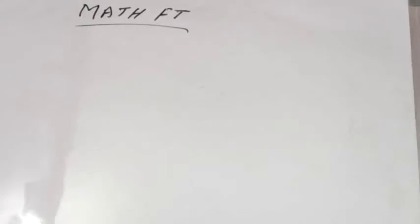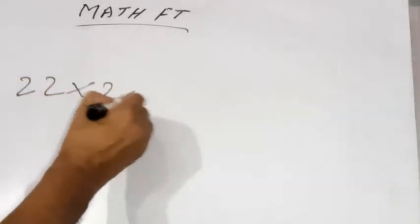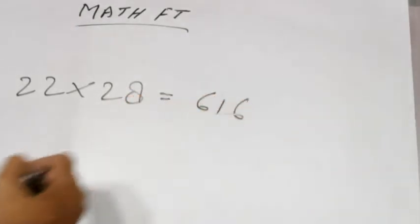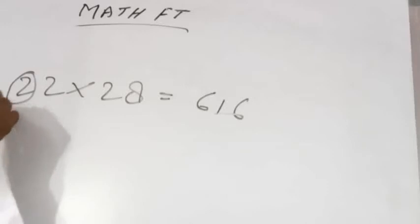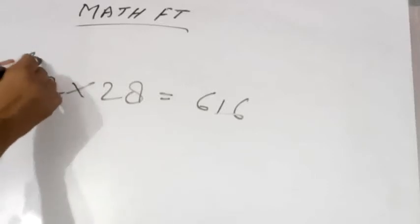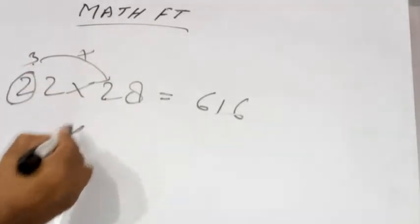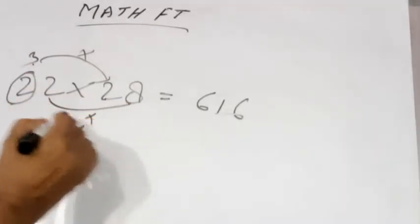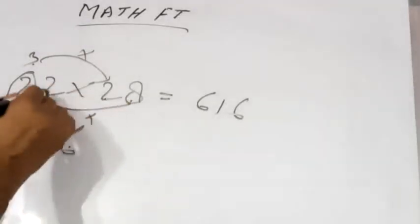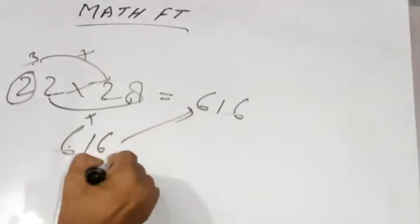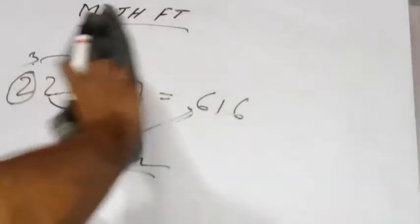See another one. Twenty-two multiplied by twenty-eight. The answer will be 616. How is this possible? This is the first number — add plus one, this will be 3. Multiply first by first: this will be 6. Then the rest two digits — 2 and 8, multiply each other: 2 multiplied by 8 equals 16. So the answer is 616. This is the magic — not a trick, not a technique.